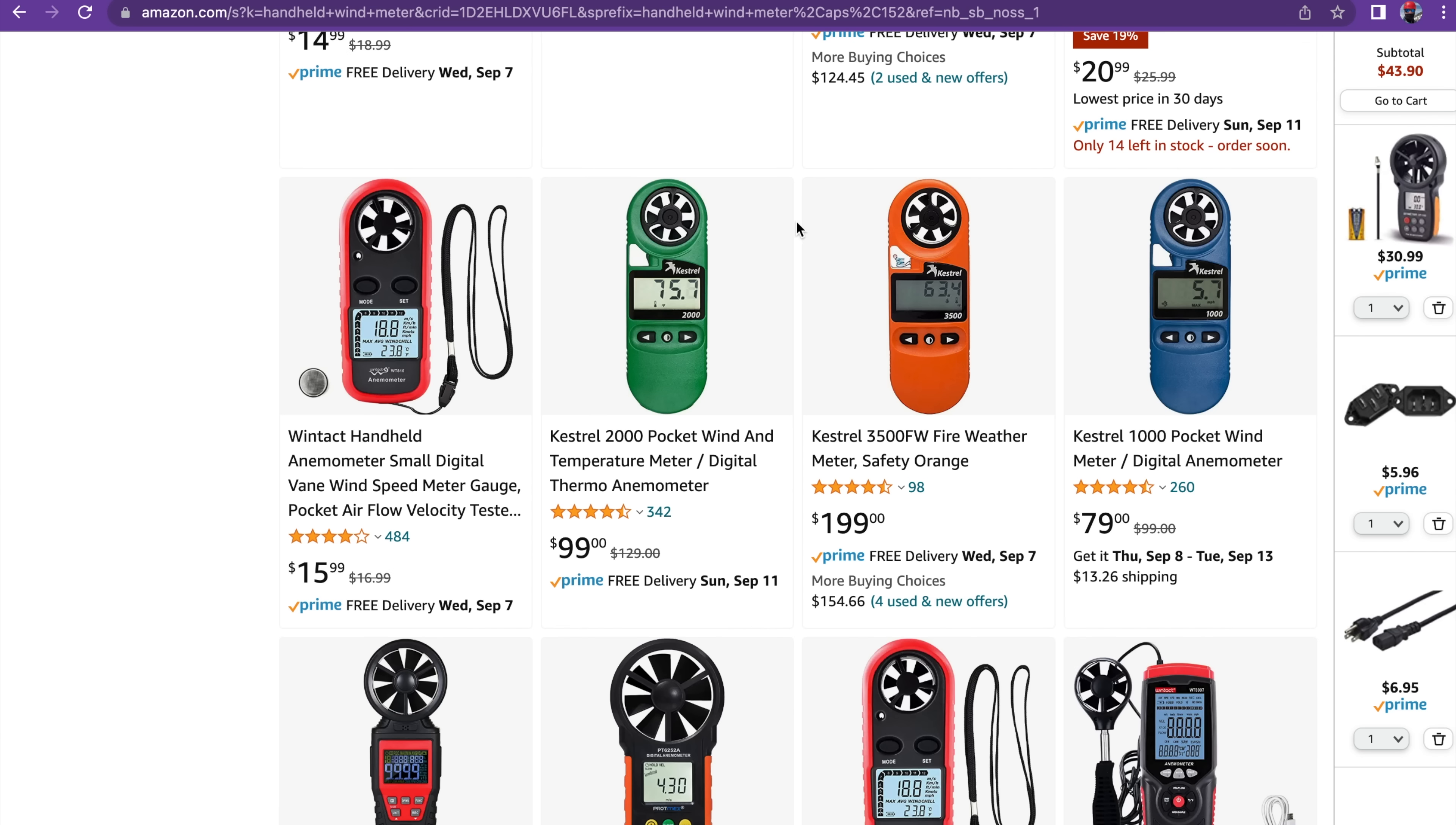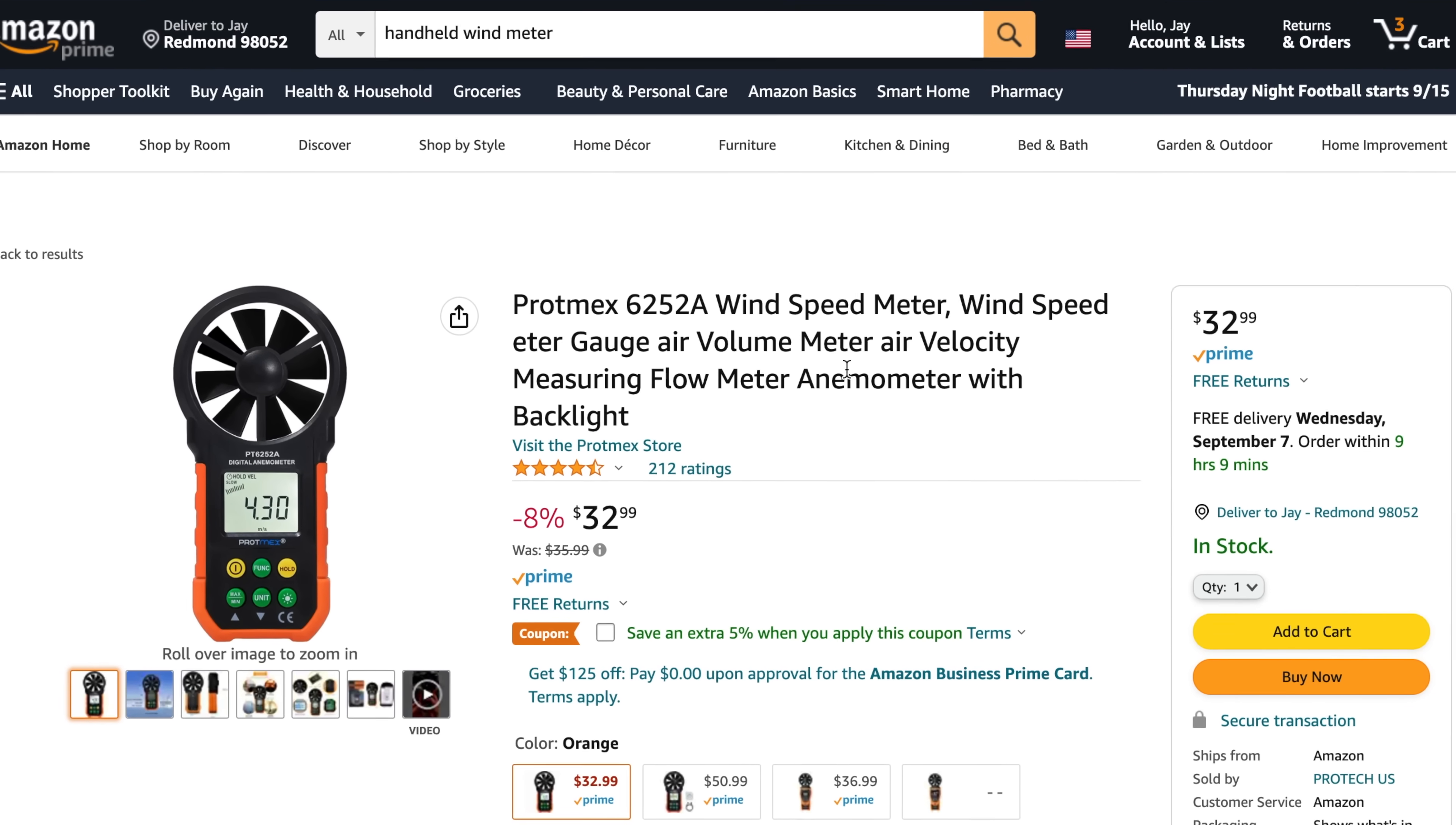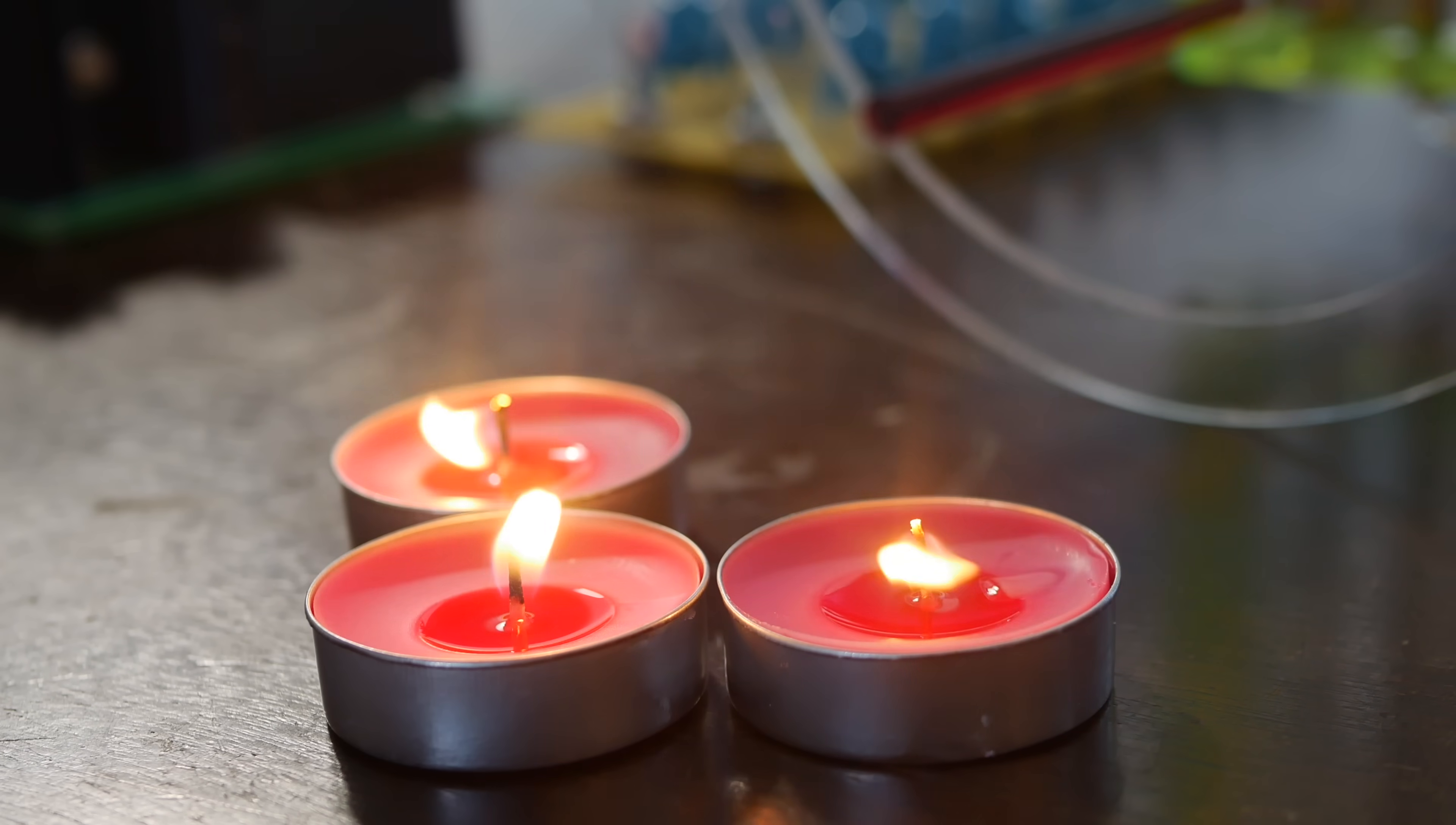This entire build is about creating thrust, right? So I needed to find a quantifiable way to measure airflow in the first place. Well, after a quick Amazonian search, I found this incredible little wind meter for cheap, which can measure down to about 0.1 meters per second. This will provide quantitative measurements. I also bought some yummy strawberry candles to qualitatively show any air currents that develop.